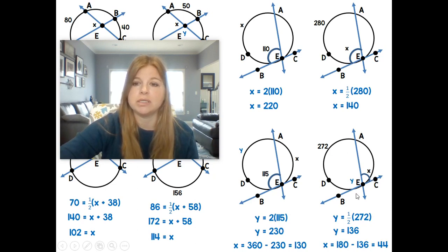The other way you could do this is you could subtract 360 minus this 272 to get this arc, and then cut that arc in half to get that same angle. I hope this is a very easy video for you. Thank you so much for watching. Bye.